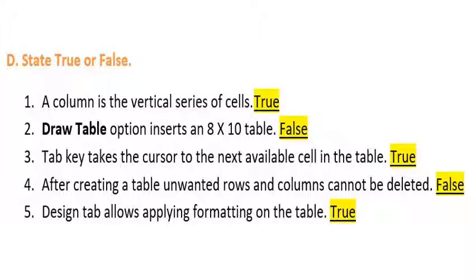Third one: Tab key takes the cursor to the next available cell in the table — this statement is true. We know that when we have created a table and typed in a cell, we press Tab to go to the next cell. Fourth one: after creating a table, unwanted rows and columns cannot be deleted — this statement is false.